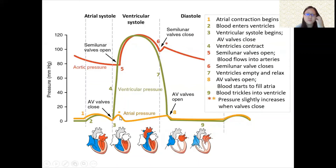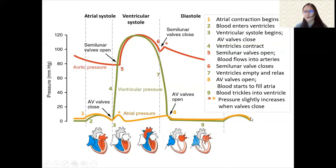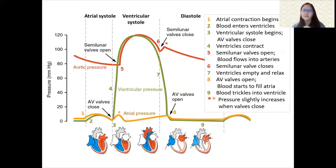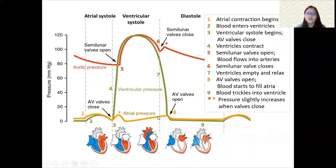You may notice two small bumps in the aortic pressure curve. These occur because when a valve closes, the pressure slightly increases — similar to the effect of enclosing a space. Generally these bumps are minor and are not typically examined, so we assume they're not there most of the time.